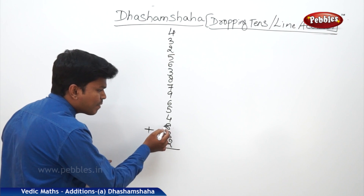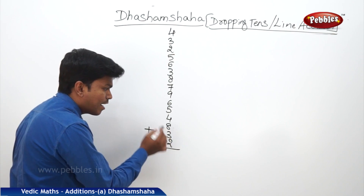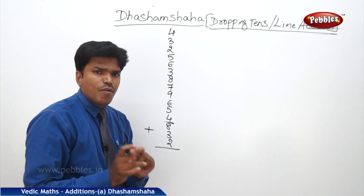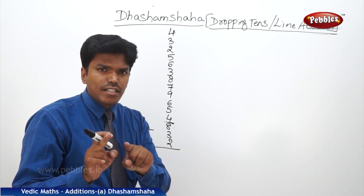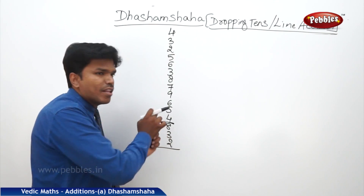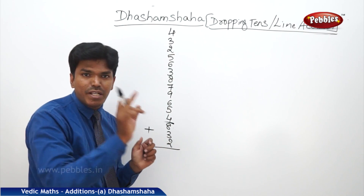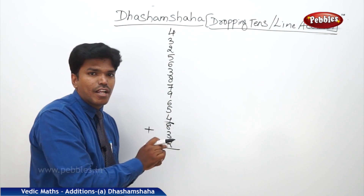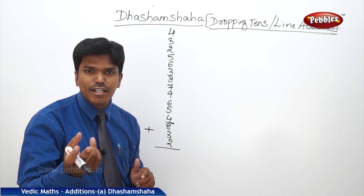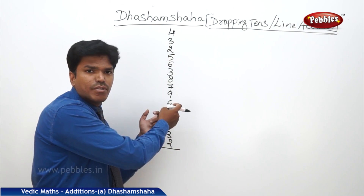Now see here. What is 2 plus 3? 5. 5 plus 8? 13. Is it more than 10? Yes. So drop a 10 here. I have to remember that I dropped a 10, so I am putting a bar on that number. That means I have dropped a 10 here. Out of 13, I dropped a 10 — the remaining is 3. So immediately carry the 3 to the next number.